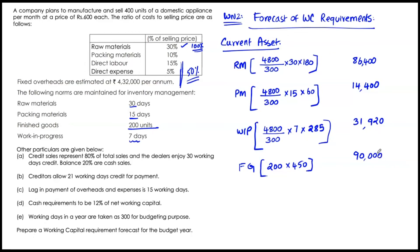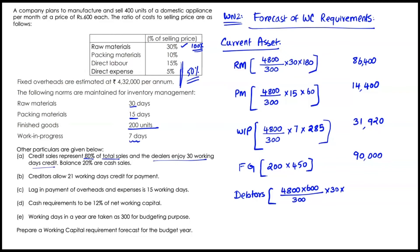Then debtors: credit sales represent 80% of total sales, and dealers enjoy 30 days credit. Total annual sales is 4,800 units at Rs. 600, for 300 days. The debtor investment is 4,800 × 600 ÷ 300 × 30 × 80% = Rs. 2,30,400. Adding all current assets — raw material Rs. 86,400, packing material Rs. 14,400, WIP Rs. 31,920, finished goods Rs. 90,000, debtors Rs. 2,30,400 — total current assets = Rs. 4,53,120.